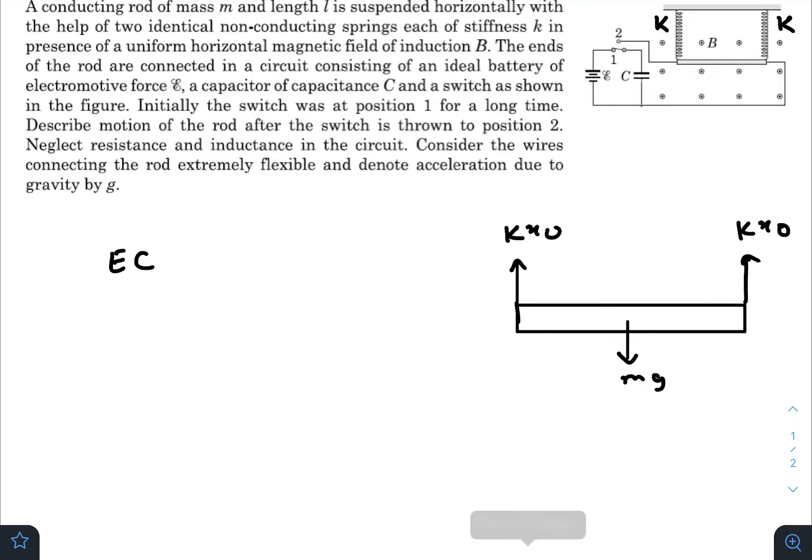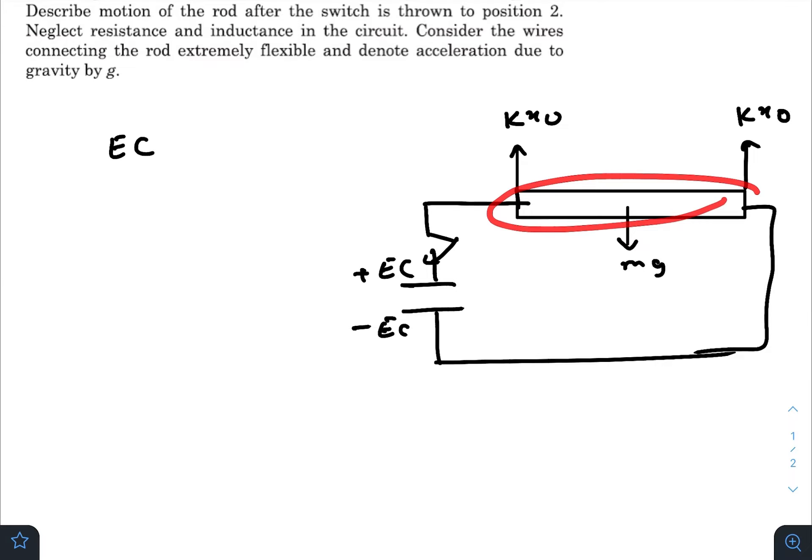Now when this charged capacitor is suddenly connected with this rod, as it is already said in the question that there is no resistance or inductance in the circuit, there is a quick flow of charge through the rod. Let me draw the magnetic field also, the magnetic field is coming out of the plane of paper. This quick flow of charge creates a short impulse of current and due to that flow of current, there will be a force on the whole rod due to the magnetic field.